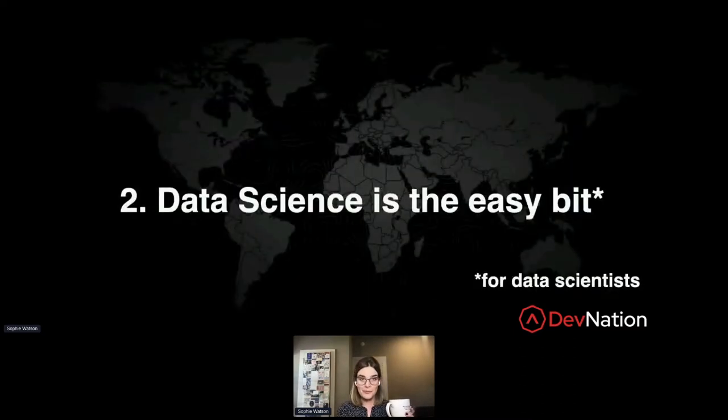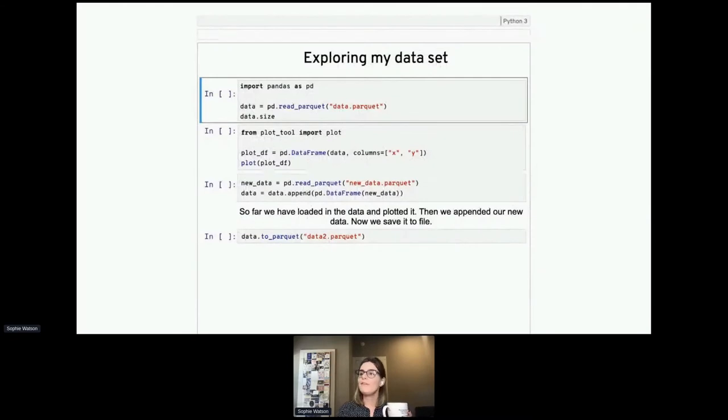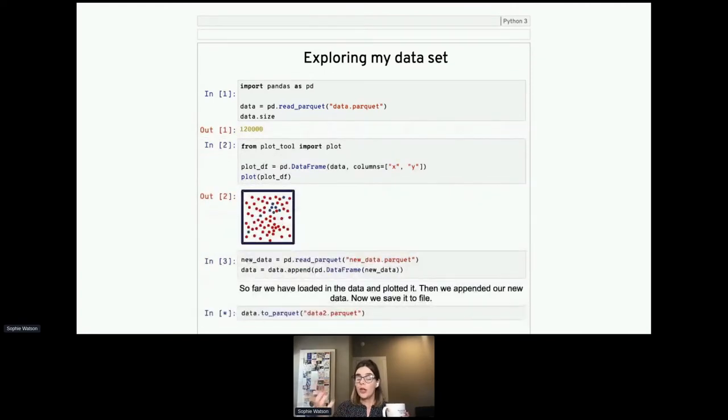Well, actually not really. For data scientists, data science is the easy bit. If you give a data scientist some data, they'll likely dive straight in, maybe go straight ahead and create a Jupyter notebook, start to load that data, explore it, understand it, plot it, transform it. And to me as a data scientist, that's the fun bit. That's the stuff that we're well versed in, we're trained in, that's where we thrive. So what's the tricky stuff?